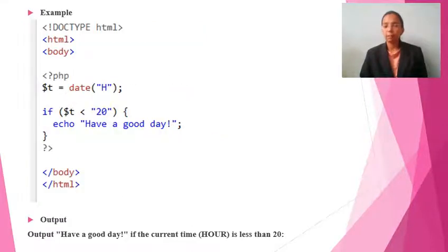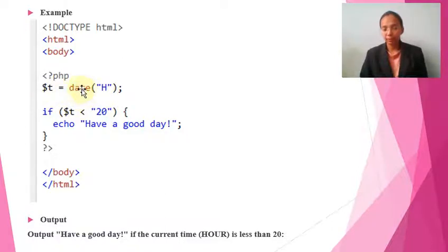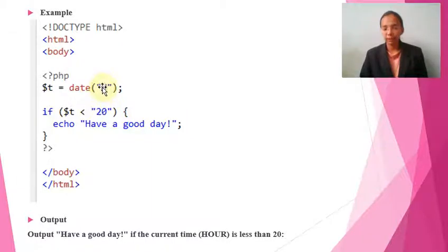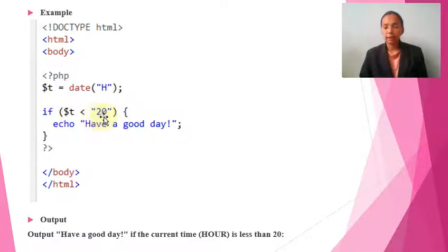Now we will see an example. We have an HTML tag, and inside PHP we assign a variable T using the date data type, where H represents the current hour of the PC — whatever hours are currently running on today's date will be taken as H. Then we have an if condition: if T is less than 20, then the message 'Have a good day' will be displayed.